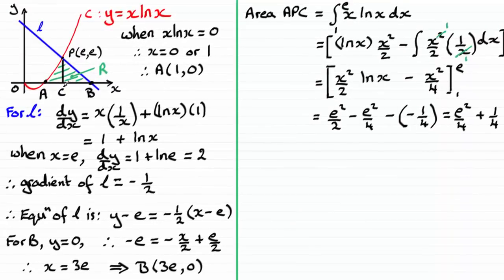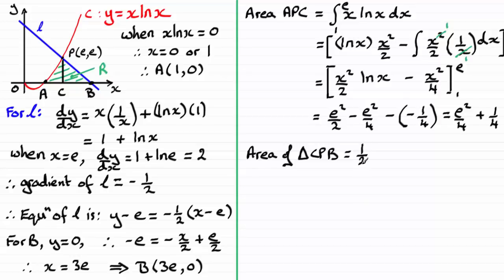Now we need the area of triangle CPB using the formula ½ × base × height. The base is the distance from C to B: 3e − e = 2e. The height is the y-coordinate of P, which is e. So the area = ½ × 2e × e = e².